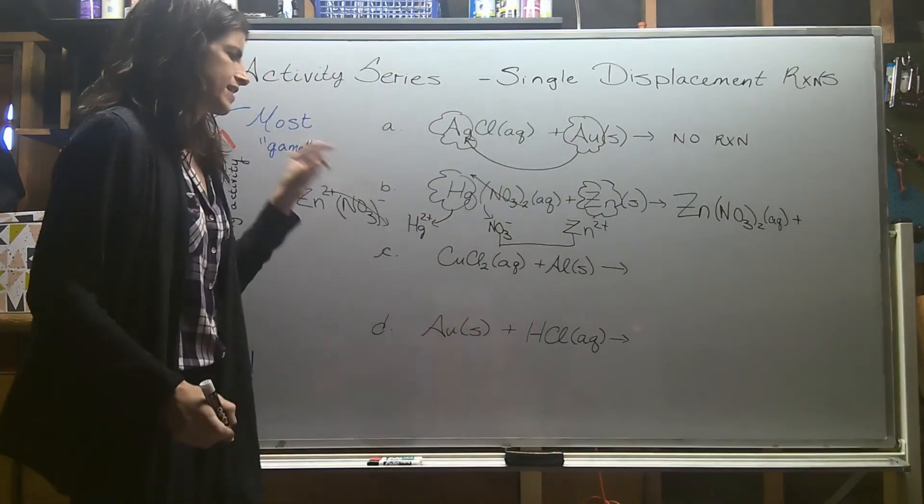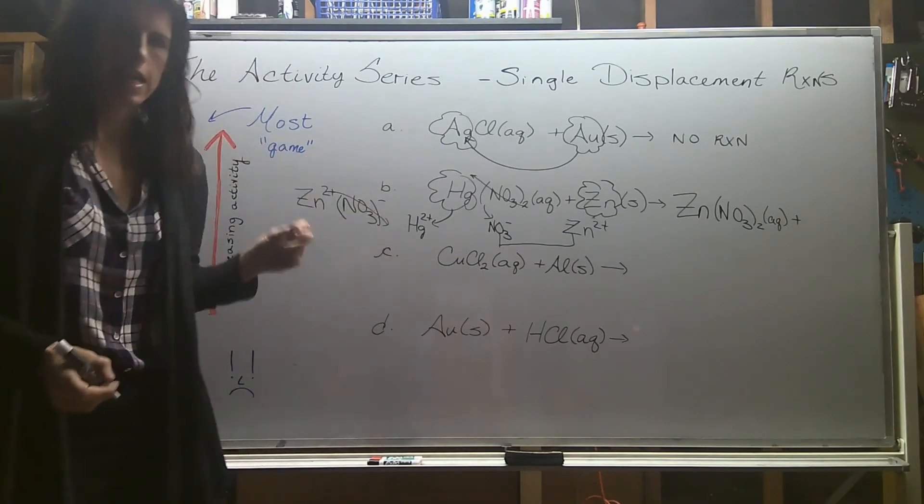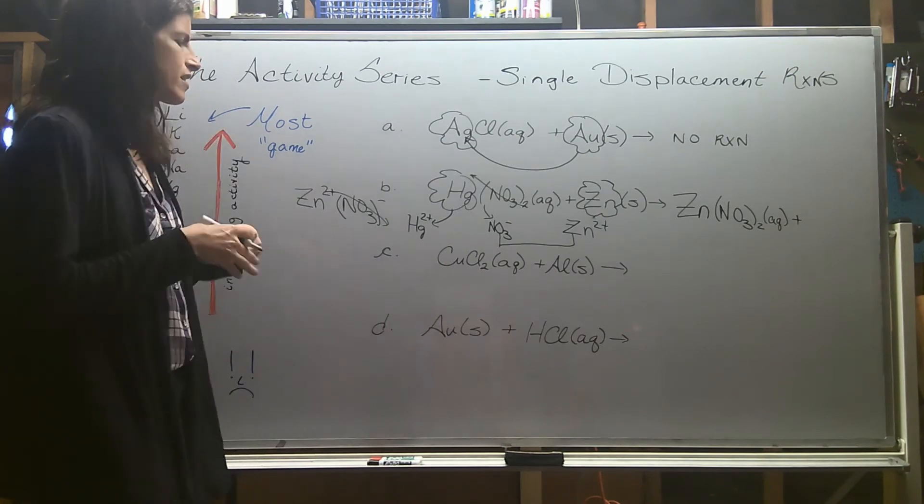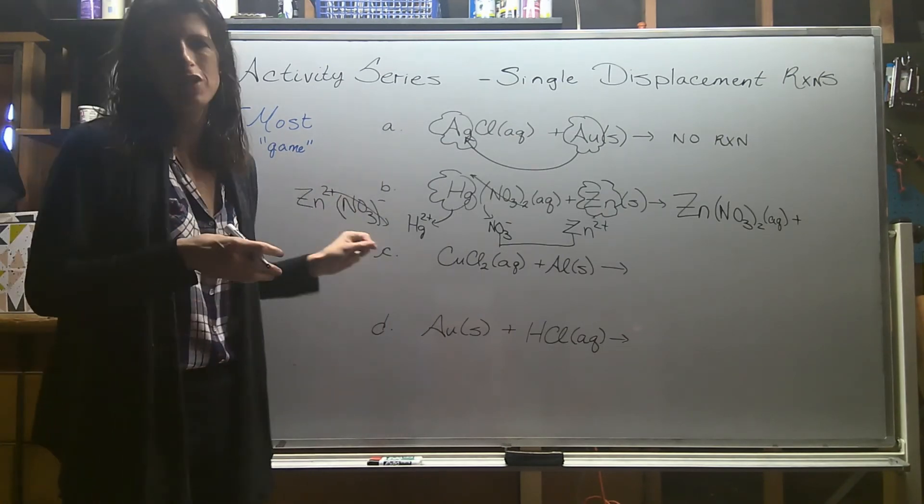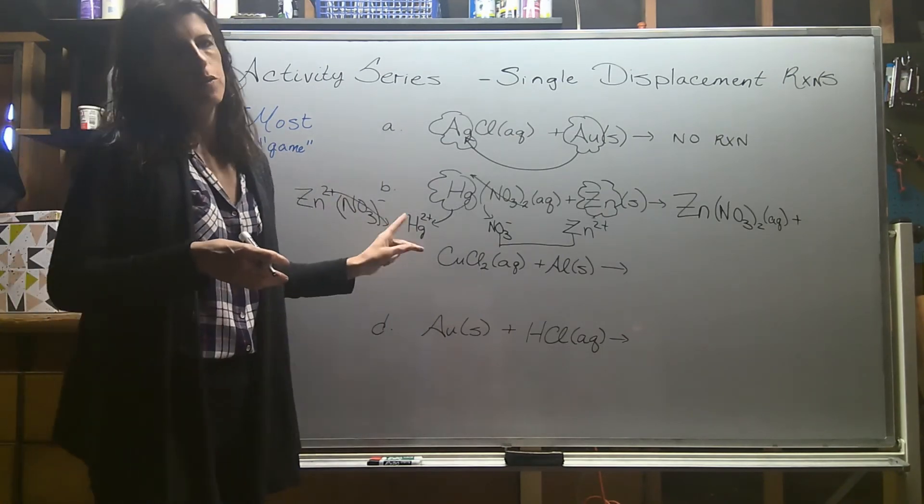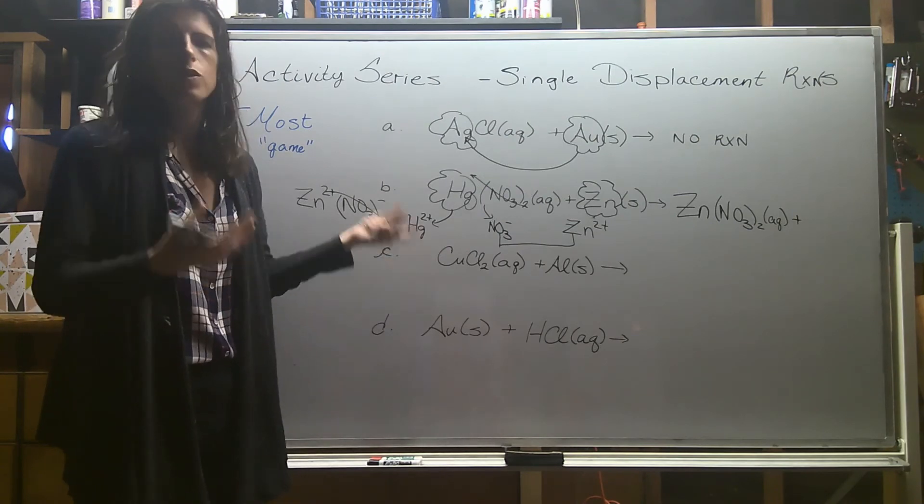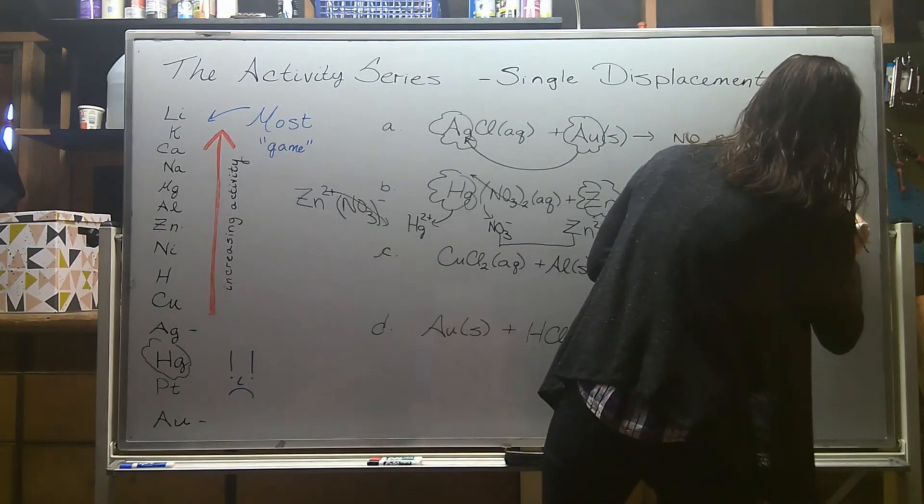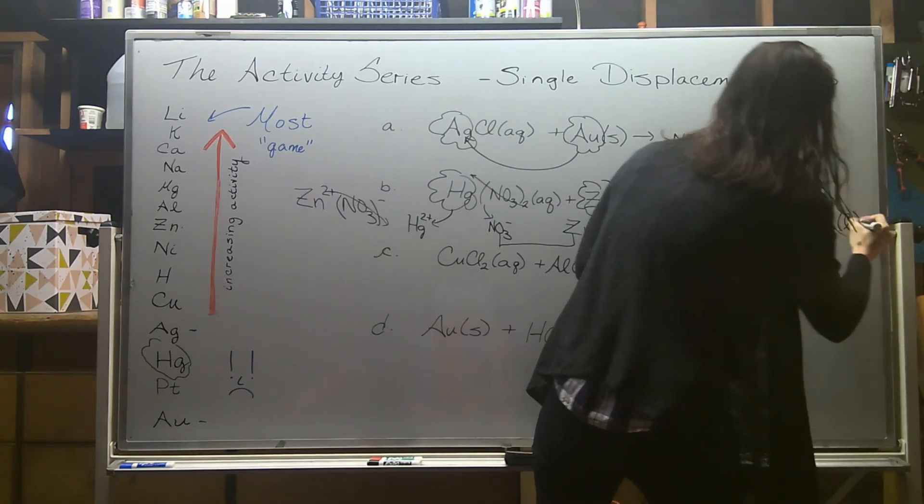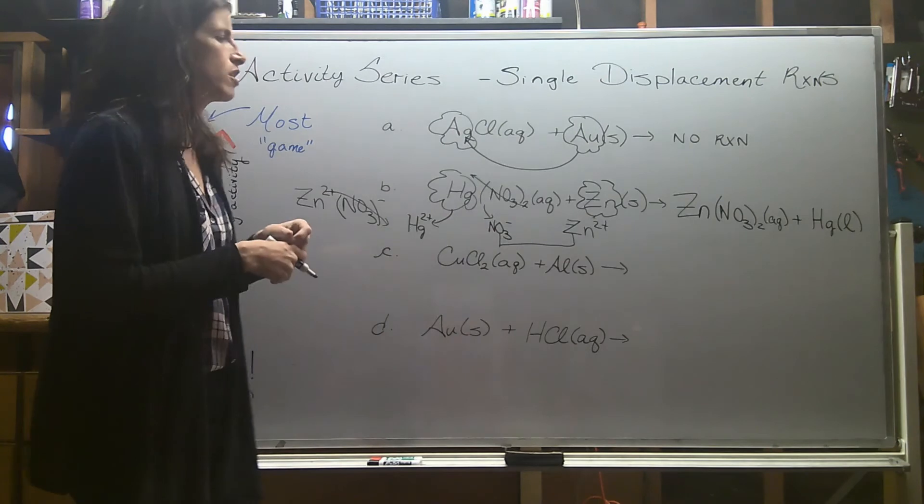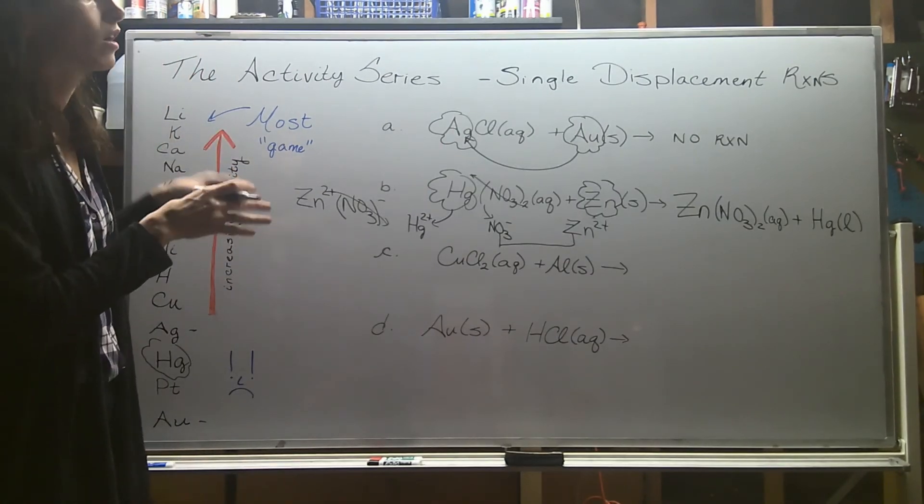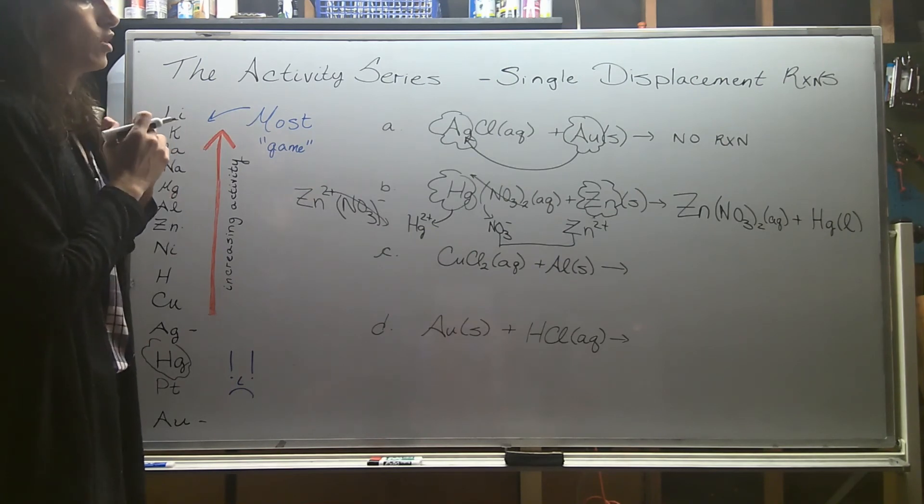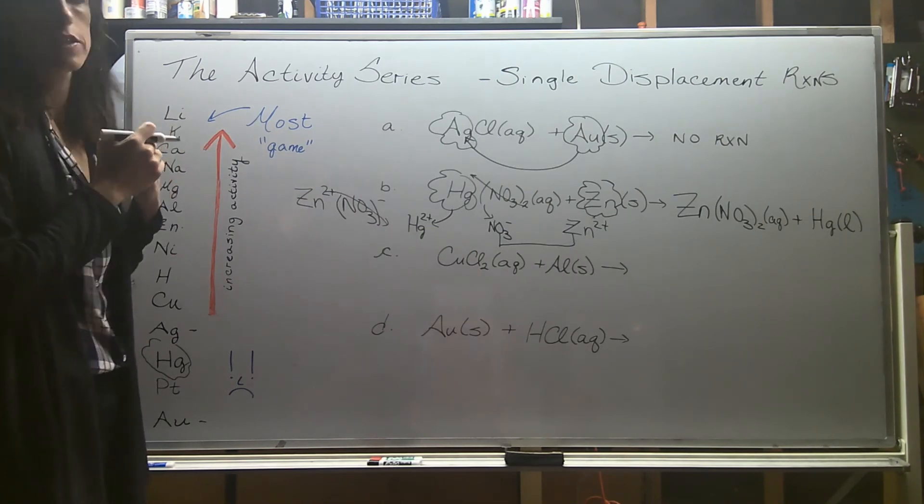And then the thing that gets kicked out actually gains electrons and becomes elemental again. So I wanted to say solid. Most of them do become solid, but I'm looking at one of the weird ones. Mercury, we know, is a liquid at room temperature. So that one actually becomes just Hg liquid. But again, most of them are going to turn into solids. Neutral, no charge. You always have to check that it's balanced. This one does happen to be balanced.